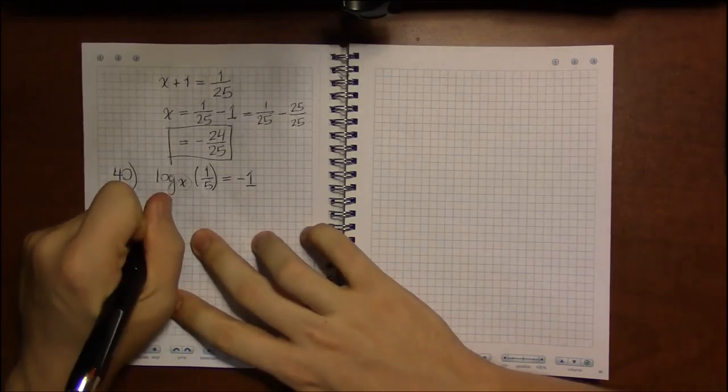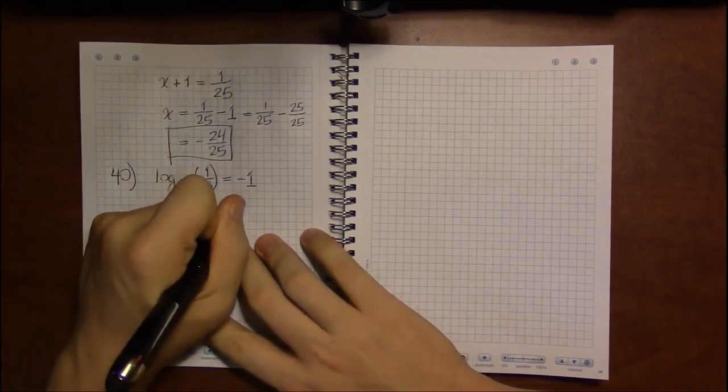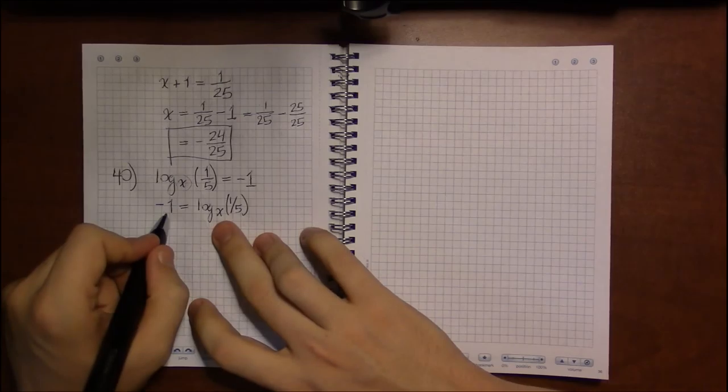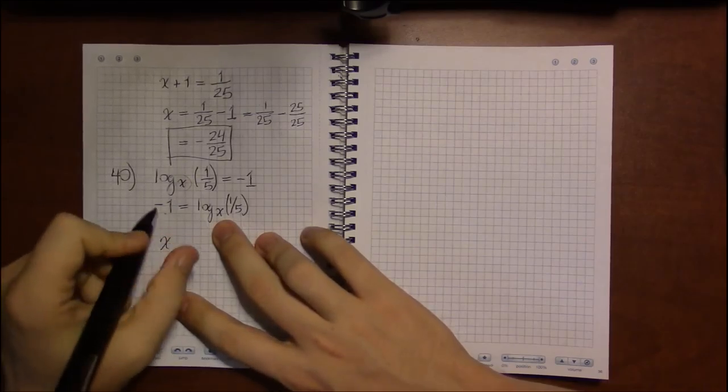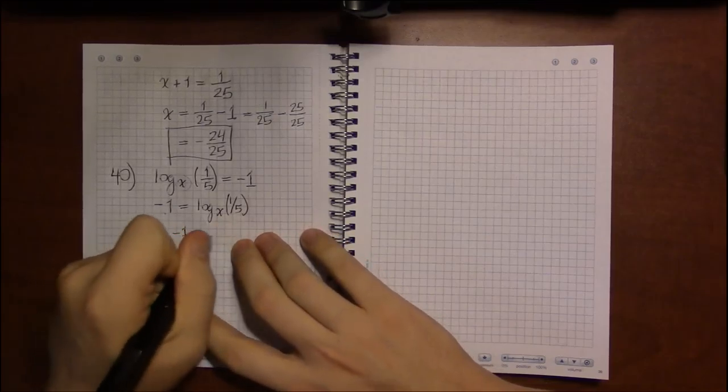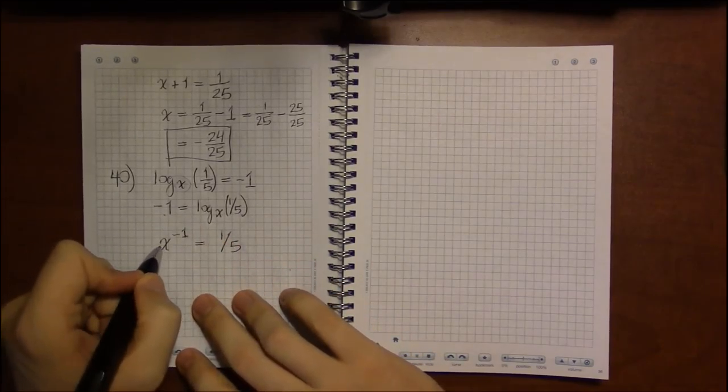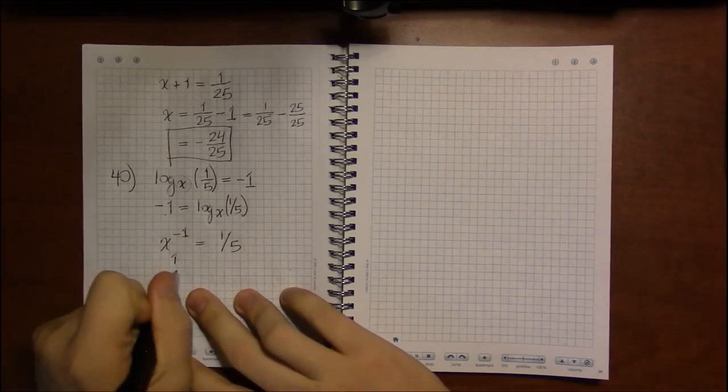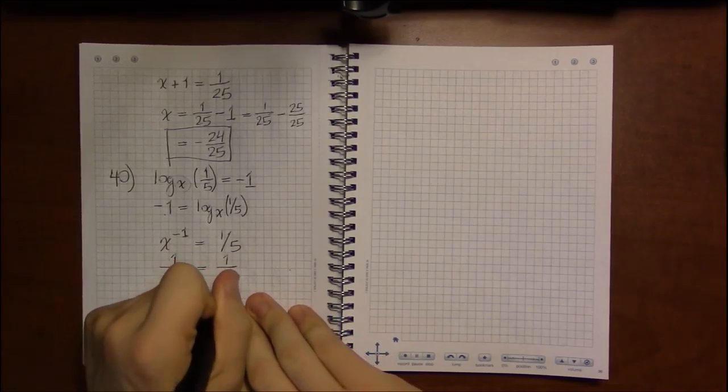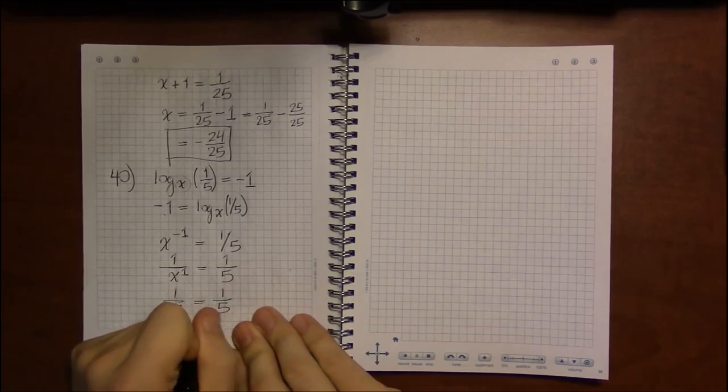But if we treat this like the past two examples, let's see where that's going to get us. So we're going to swap these two around. So it's going to become x comes first, minus 1 is second and is an exponent, and then 1 fifth is the last thing to appear. Now x to the minus 1, we can change that to x to the first if we put it in the denominator. And x to the first is just x. So we have 1 over x is 1 over 5.